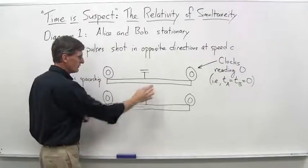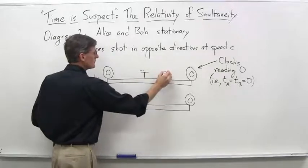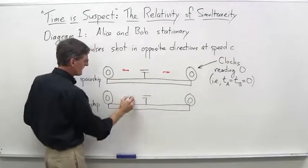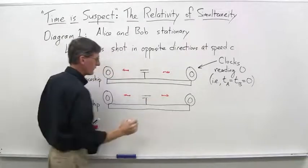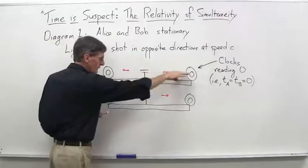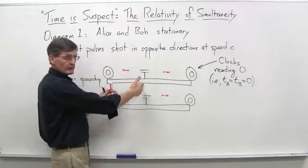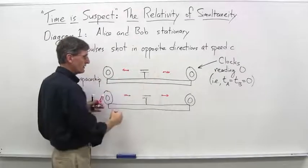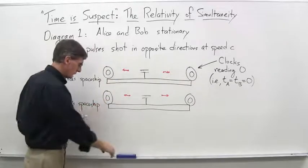And we could imagine we have one about right there going that direction, and right here going this direction, and the same thing down here for Bob with our light pulses. In other words, they would track exactly, right? This light pulse would track with this one. This one would track with that one. Assuming the light gun is exactly the center, we know the light pulses are going to reach the clocks on the ends at exactly the same time.